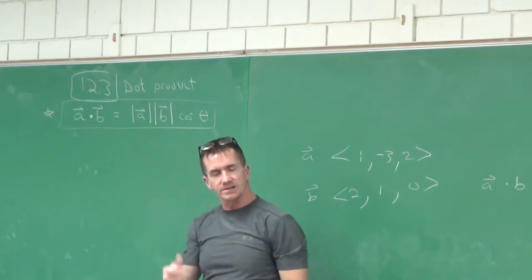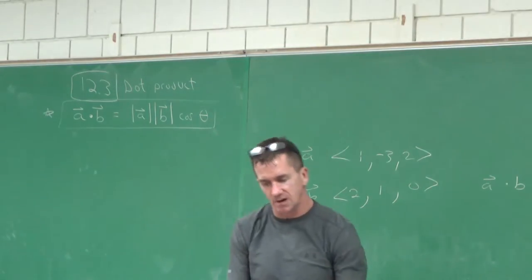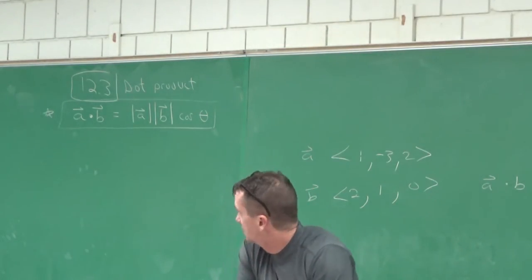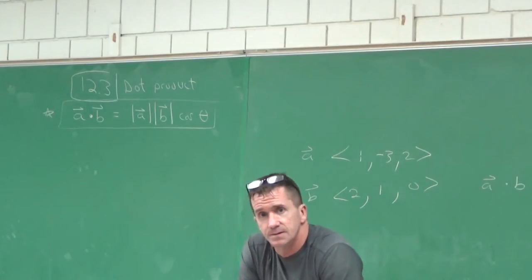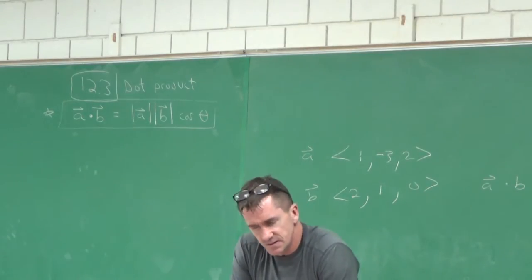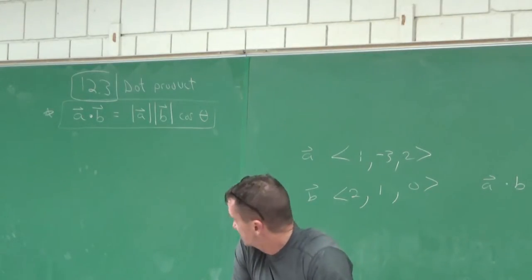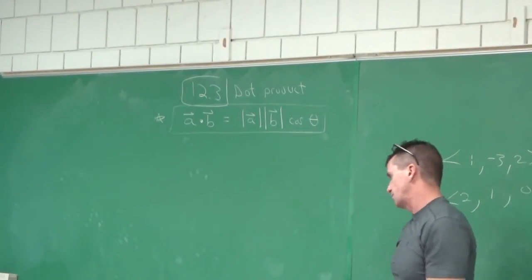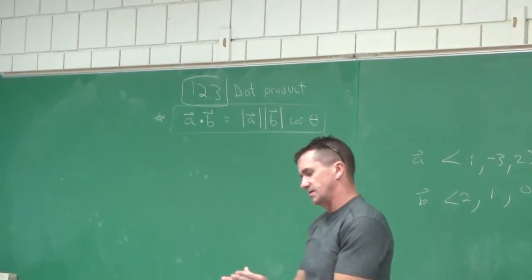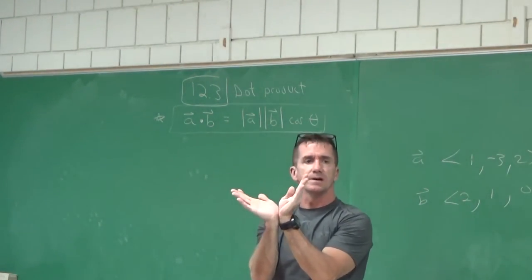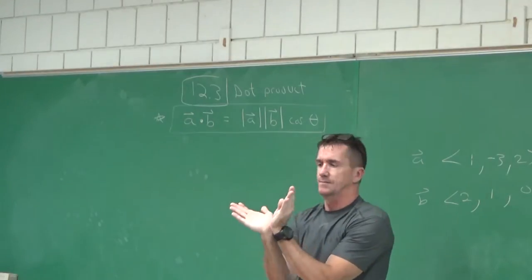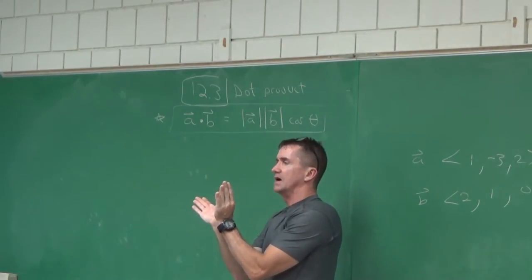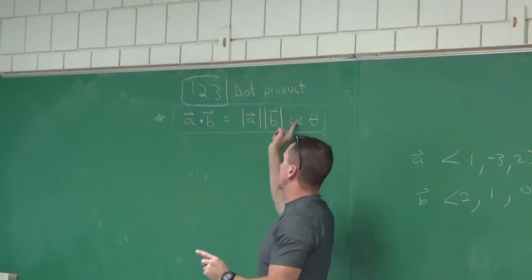There's one that looks like this but is the cross product — that's what we'll cover in section 12.4. Maybe we should write it right underneath. So this is the dot product of two vectors. Why is this important? Number one, it can tell us about two vectors that are perpendicular to each other — at 90 degrees. What's the cosine of 90 degrees?